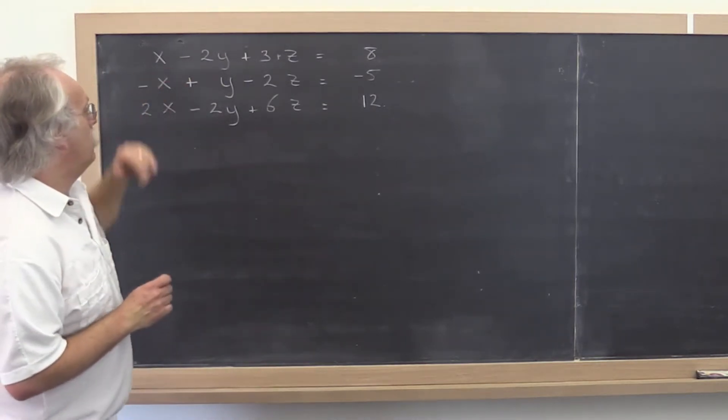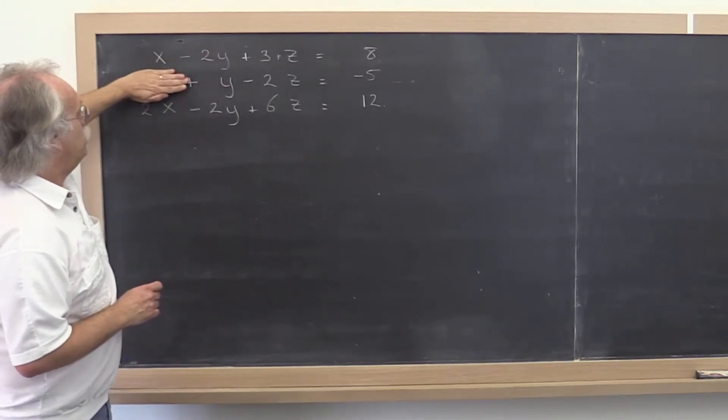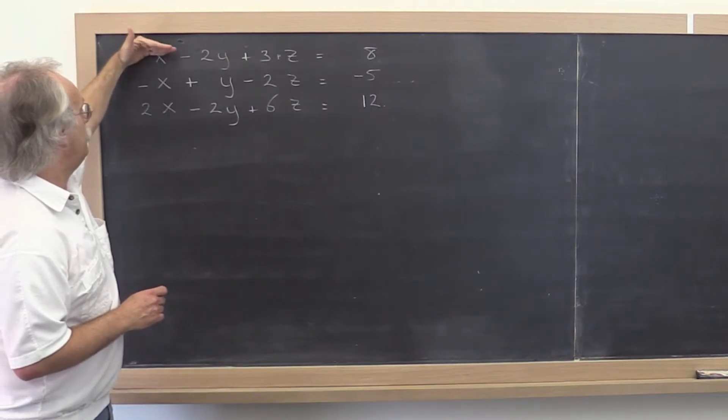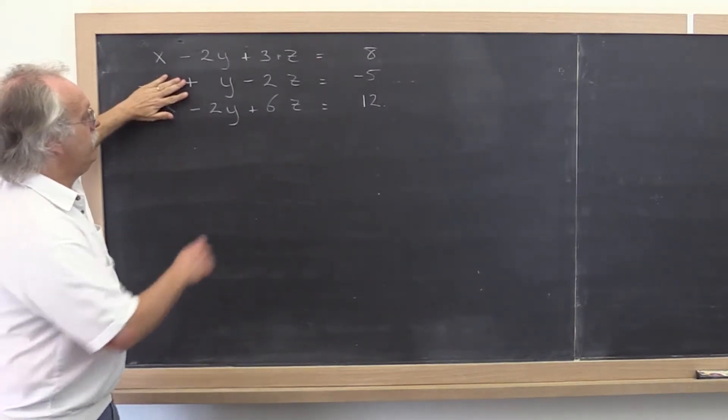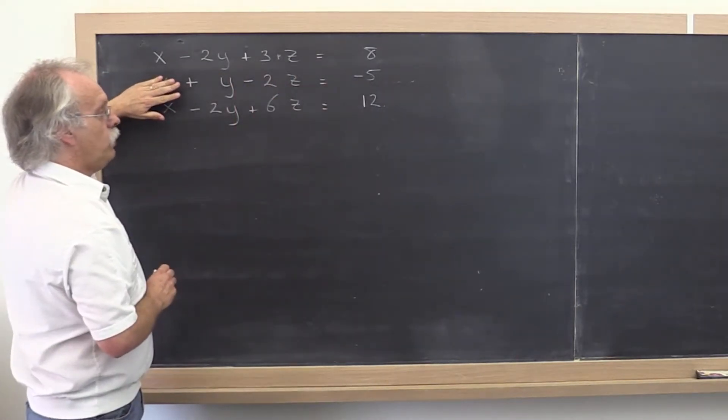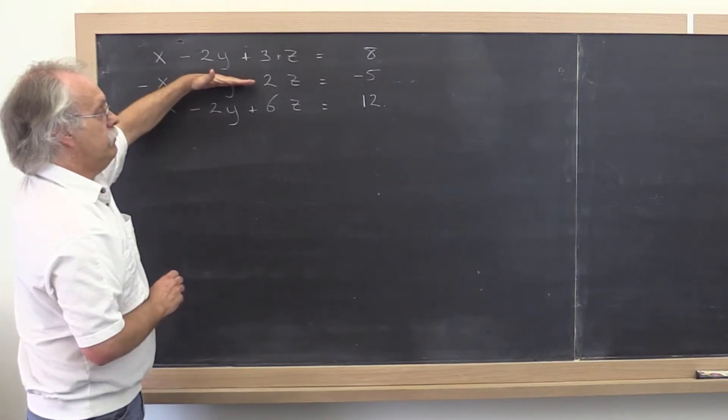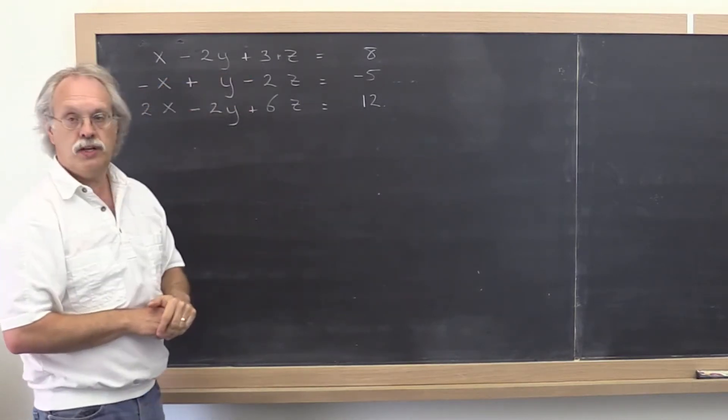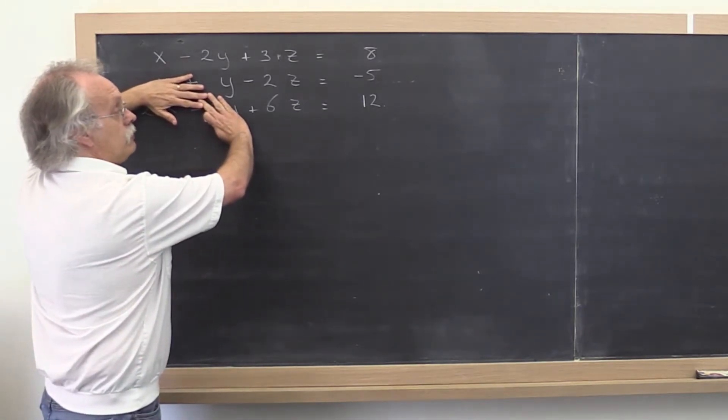So how would you do that? Well, you would take the first row and add it to the second row, and that would take this term away. And then you would take two times the first row and subtract it off the last row, and that would take that term away. And then you would be left with a smaller system of two equations and two unknowns. And then you would take multiple of this equation and subtract it from that equation. And eventually what you end up with is an upper triangular system.